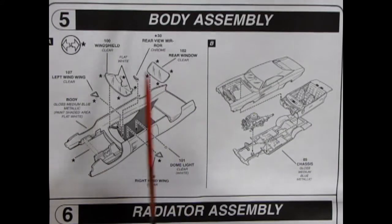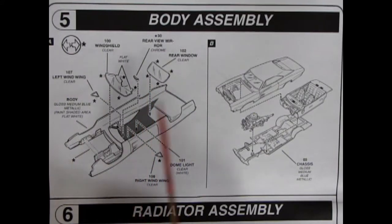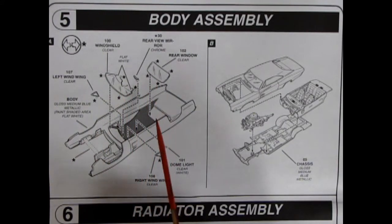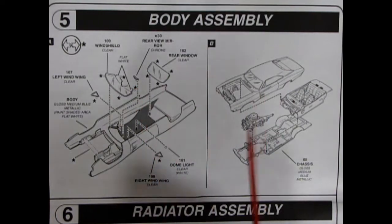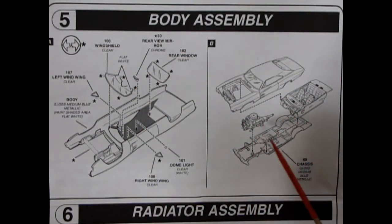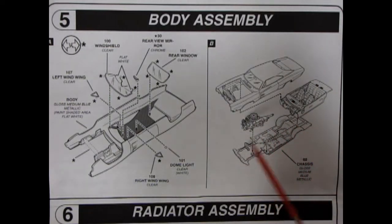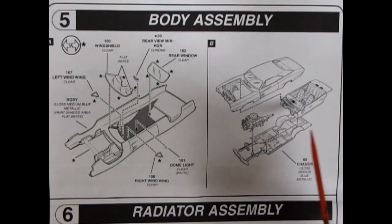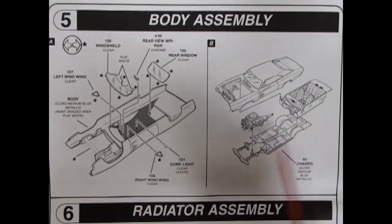Panel five is showing our body assembly going together with the body here and then all our clear windows as well as the rear view mirror. And then the body hooks into the interior, which then hooks onto the chassis and the engine drops into the engine mounts. I do believe it goes one, two, three, four.